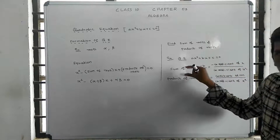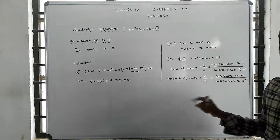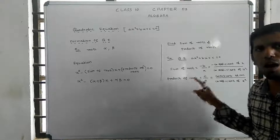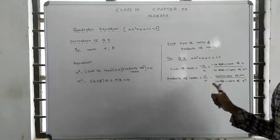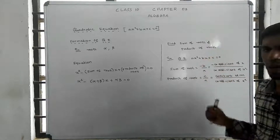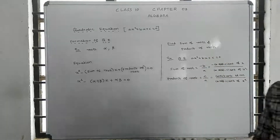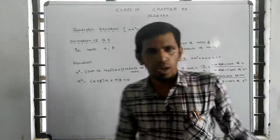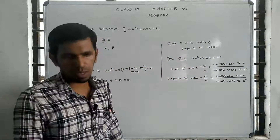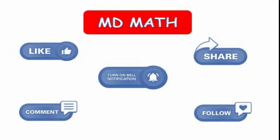So the formula for the sum of roots is minus B by A, and the formula for the product of roots is C by A. Using these formulas makes it much easier to solve quadratic equation problems.